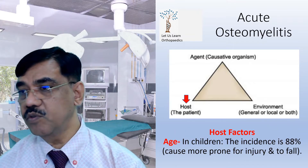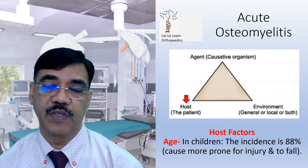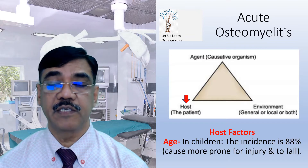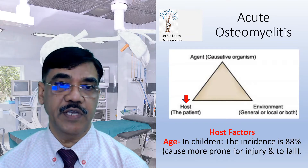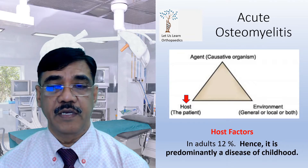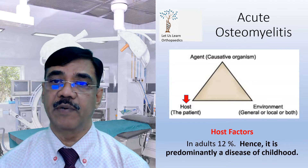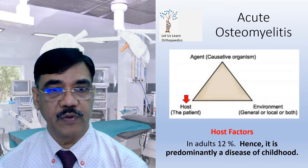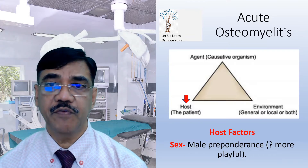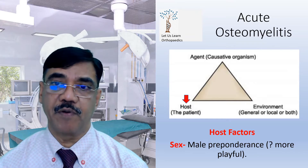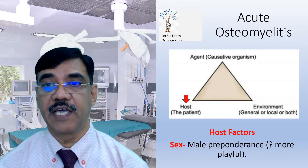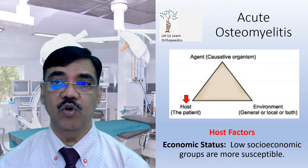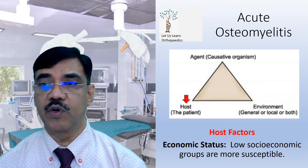Now coming to the host factors. Age: in children, the incidence is 88%, because they are more prone to injury and falls. In others, it is just 12%, and hence osteomyelitis is predominantly a disease of childhood. Sex: there is male preponderance, because males are more playful. The third host factor is economic status — the low socio-economic group are more susceptible.